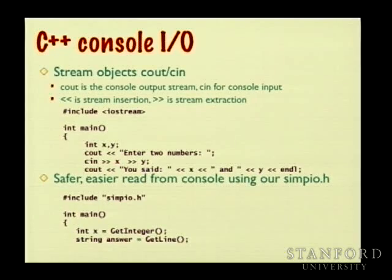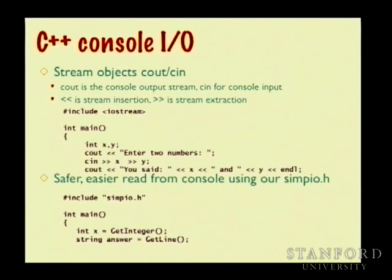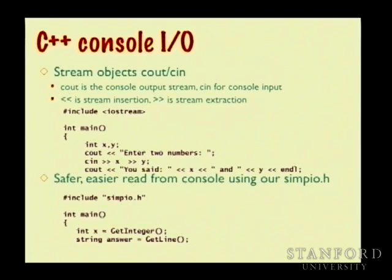We started to talk about this on Monday, and I'm going to try to finish off how input-output works in C++. We've seen the simple forms of using stream insertion — the less-than less-than operator to push things onto cout, the console output stream. Cout can write all the basic types: ints, doubles, chars, and strings. You can chain those together, and endl is the stream manipulator that produces a new line.